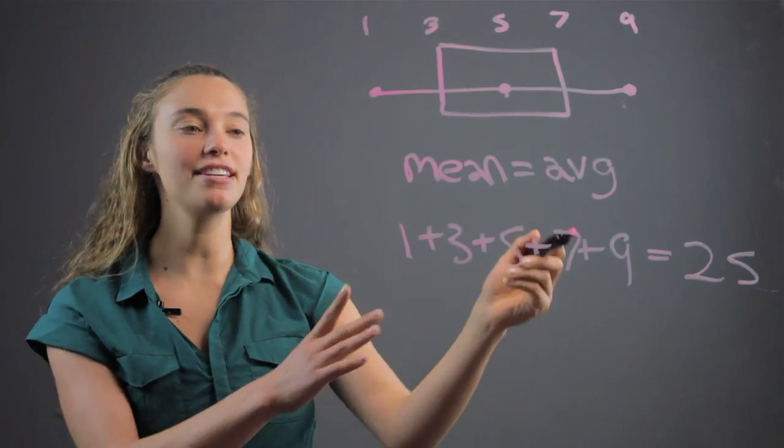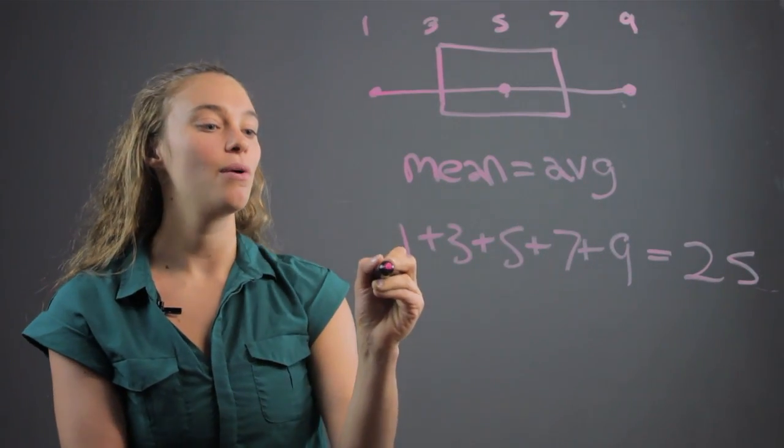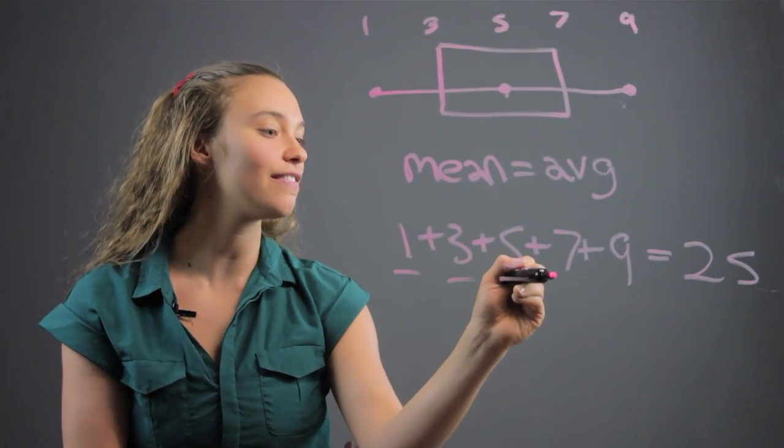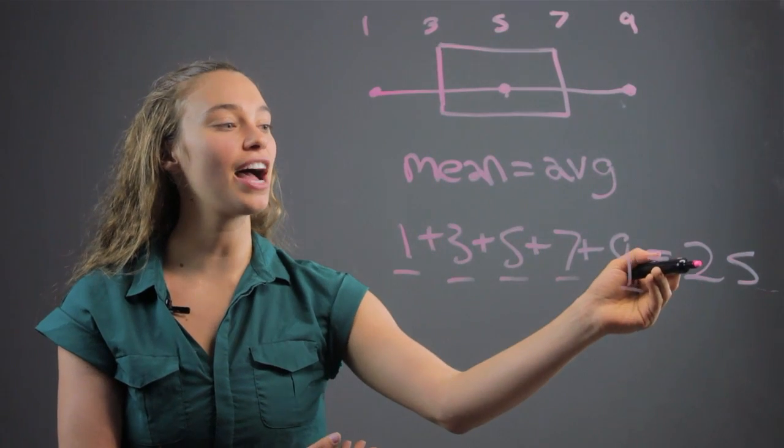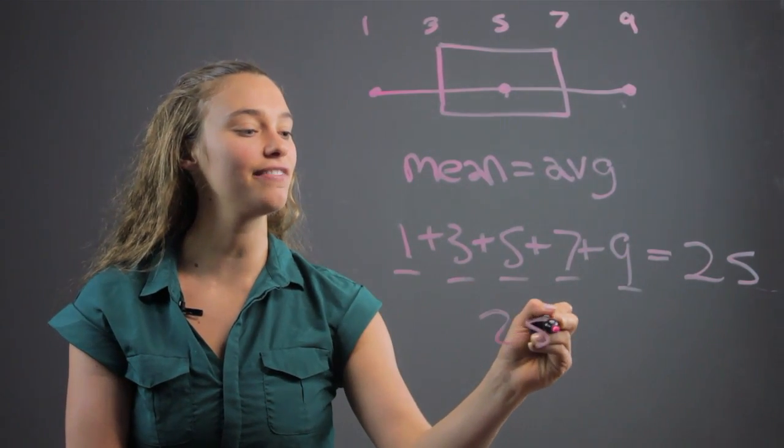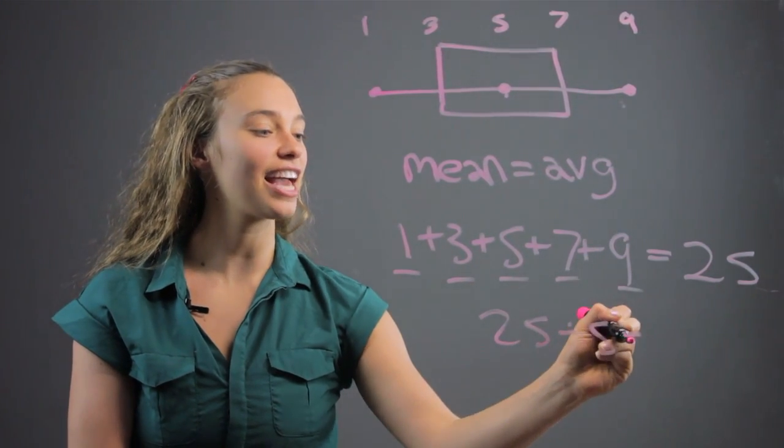Now we're going to divide by the number of numbers we have, one, two, three, four, five. We divide five into twenty-five to get five.